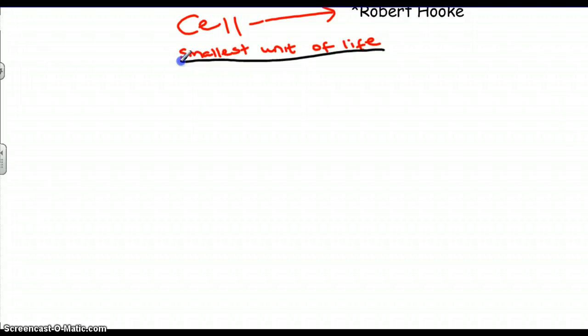Let's begin with the first type of cell, prokaryotic cells. Prokaryotic cells are very simple cells. They have very few parts and very few functions. Examples of prokaryotic cells are bacteria.